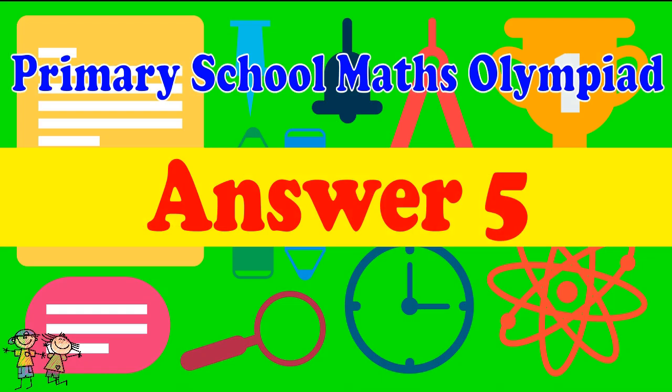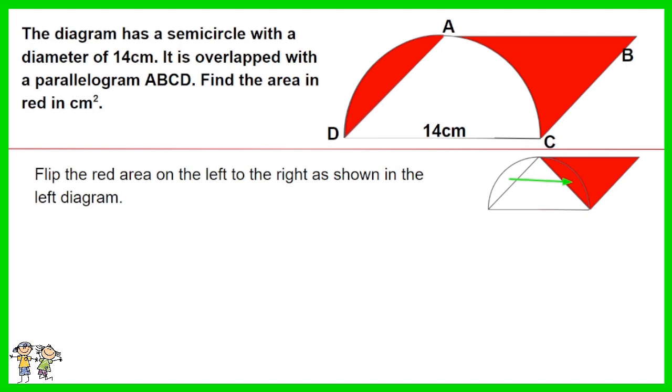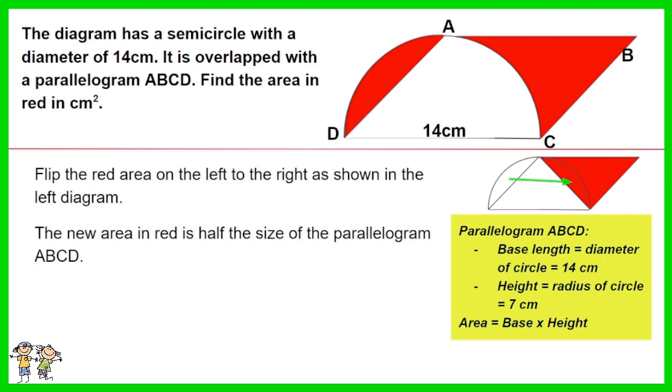Answer for question 5. Flip the red area on the left to the right as shown in the left diagram. The new area in red is half the size of the parallelogram ABCD. Parallelogram ABCD has a base length which is the diameter of the circle 14 centimeters and height equal to the radius of the circle 7 centimeters.